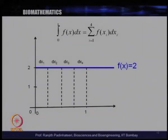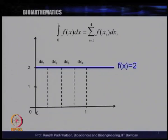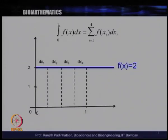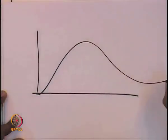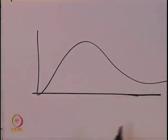We understood this for a simple curve, like a constant value, where the area is length times breadth — the area of a rectangle, which is easy. But you can think of more complex curves which have some curvature. Let us think of some kind of a wiggly curve.